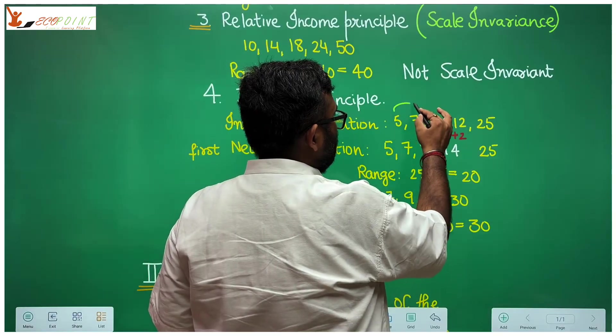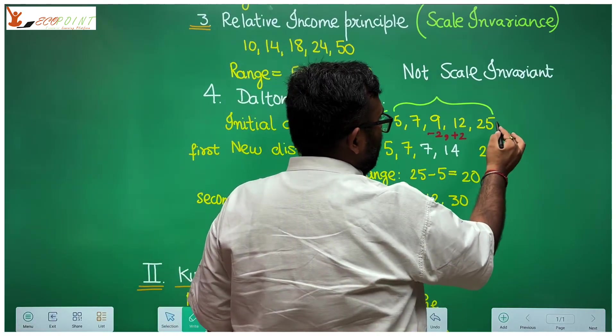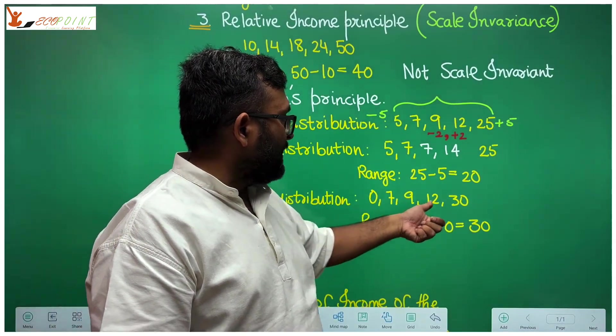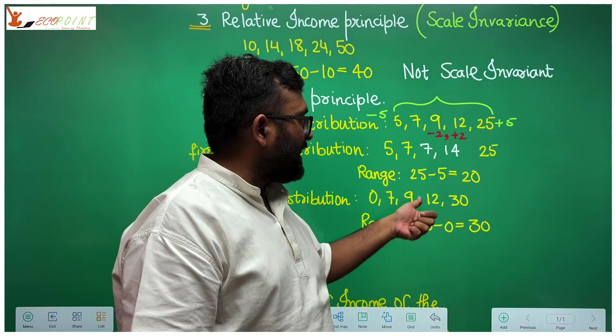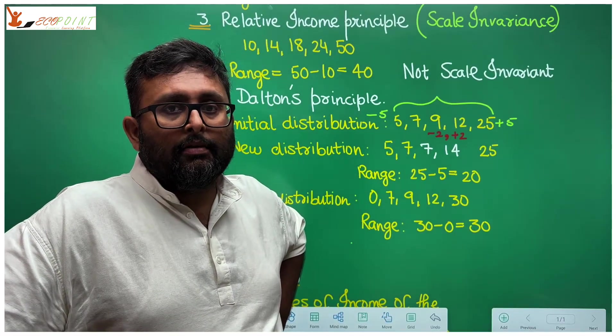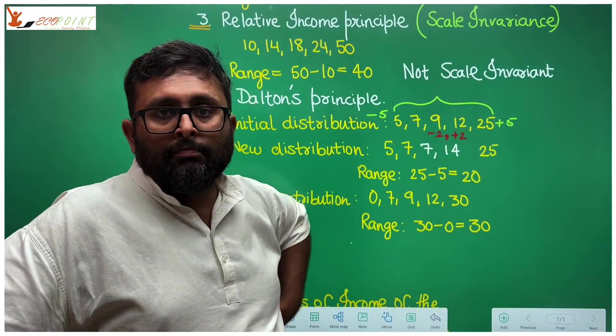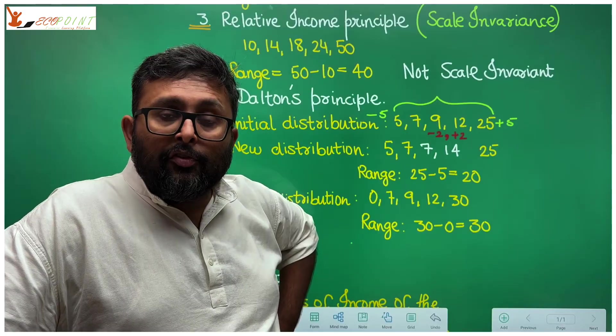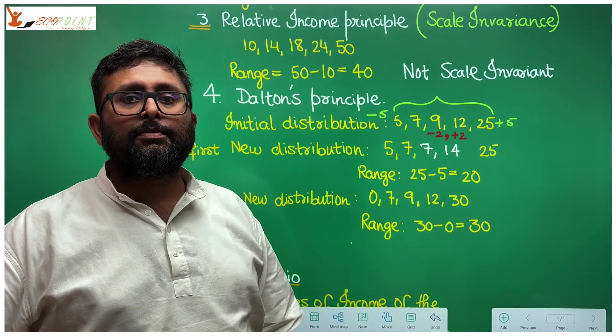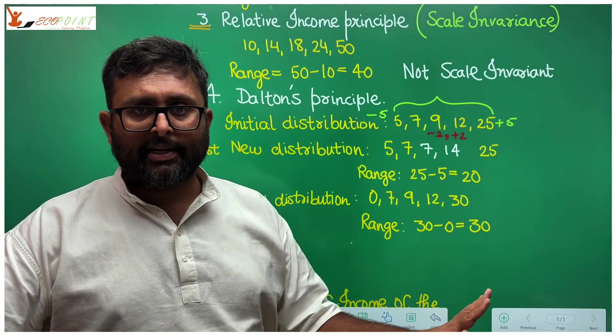So supposedly, if this was my initial distribution, what I do is subtract 5 from the poorest individual, and add 5 to the richest individual, then what happens? Inequality should increase. The new distribution becomes 0, 7, 9, 12, 30. Maximum minus minimum is 30 minus 0, 30. Inequality has increased. So you can't say it categorically whether Dalton's principle is going to be satisfied or not. If you are actually hitting the minimum or maximum numbers, then maybe Dalton's principle is going to be satisfied. But it should be satisfied in all cases. It is not satisfied.